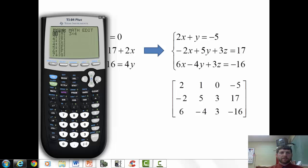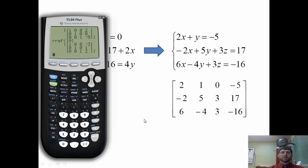Matrix math. RREF of matrix A. Hit enter. Negative 3, 1, 2 because we got the 1, 1, 1 and the 0's in every other spot. So that should be our solution.